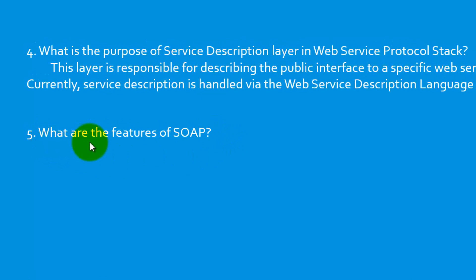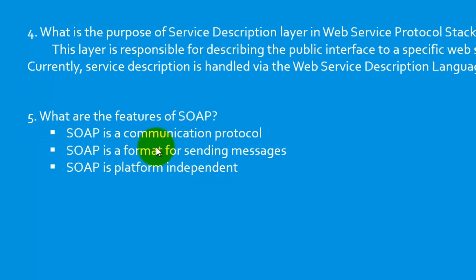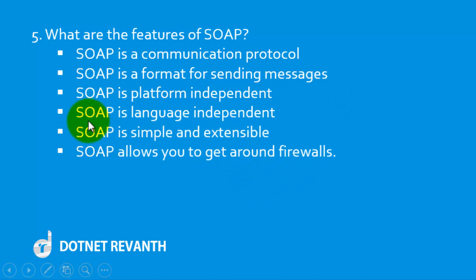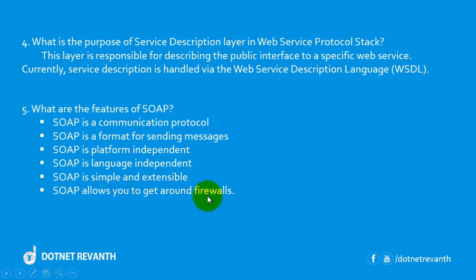Fifth question: what are the features of SOAP? SOAP is a communication protocol. SOAP is a format for sending messages. SOAP is platform independent. SOAP is language independent. SOAP is simple and extensible. SOAP allows you to get around firewalls because it uses XML-based communication.